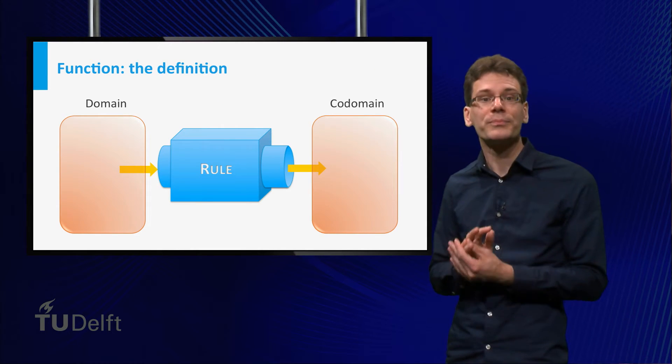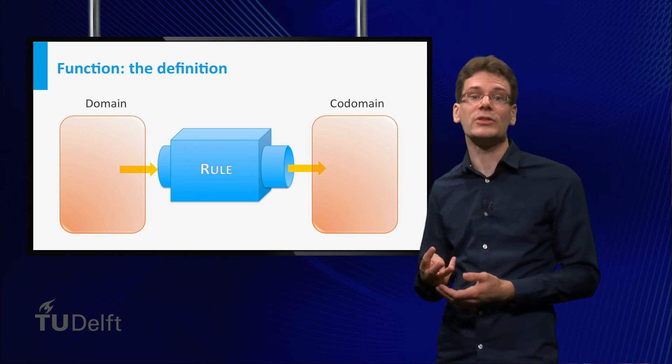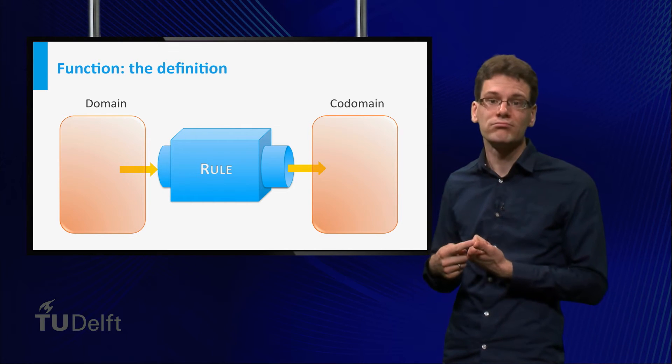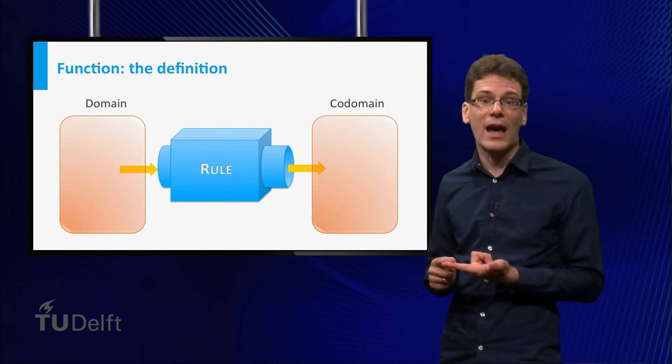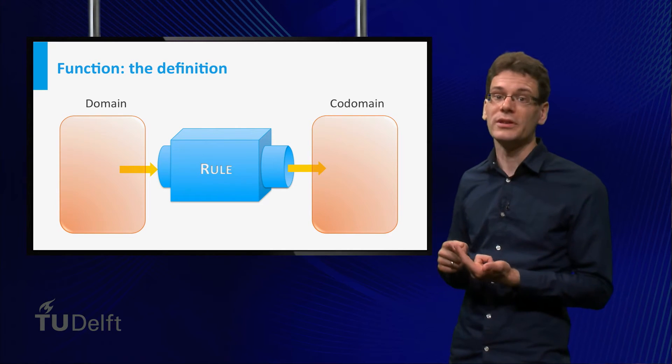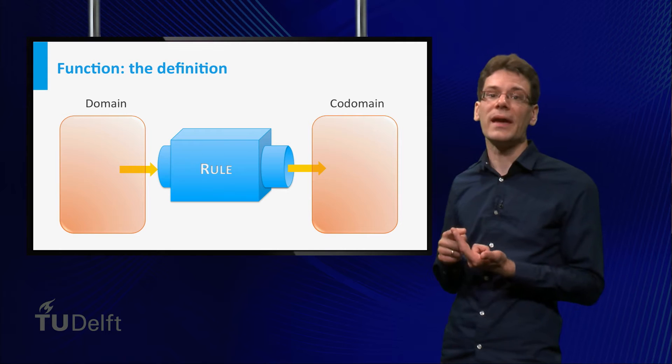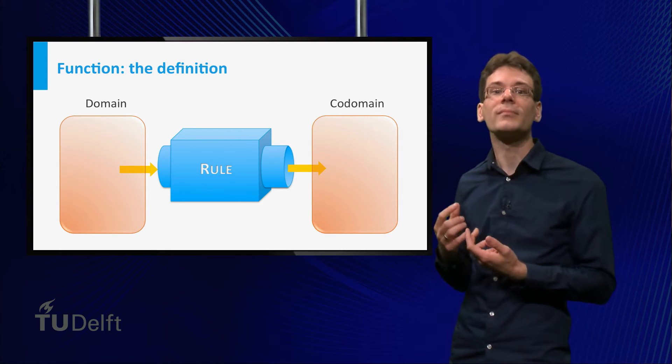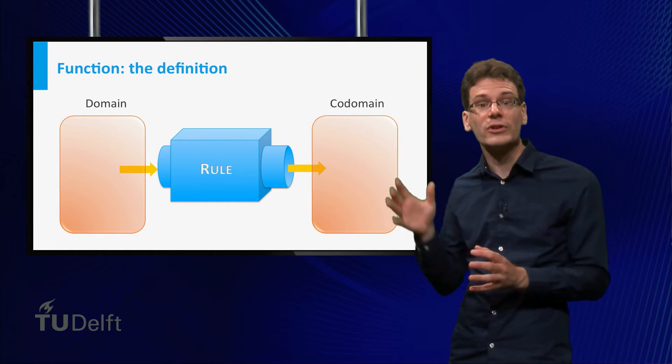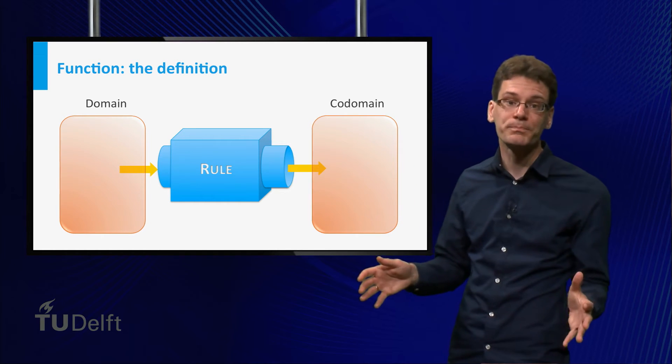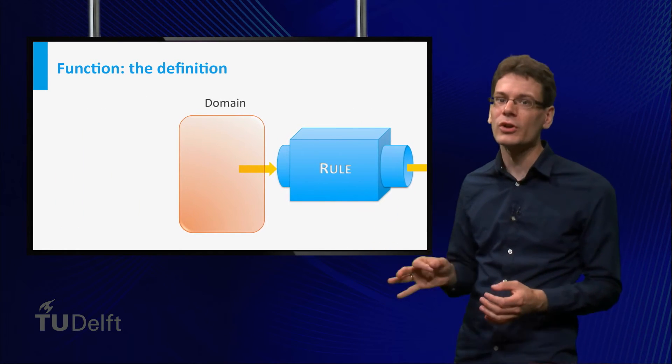Remember the setup. A function is defined by three pieces of data: the domain, the set of possible inputs; the codomain, a set in which the outputs end up; and a rule that associates to every element in the domain an element in the codomain. In previous videos, we mainly focused on the rule that tells you how to get from the input to the output. Now I'd like to look more closely at the domain.